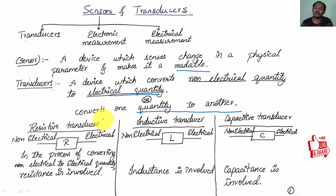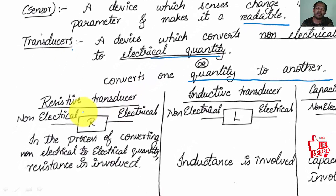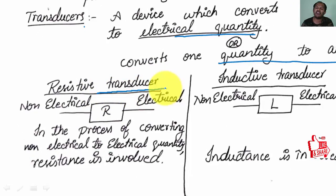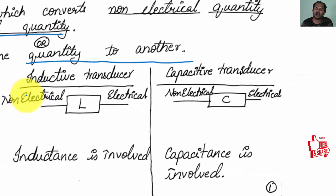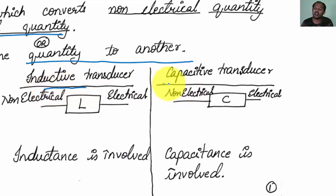A transducer converts non-electrical quantity to electrical quantity. If it makes use of a resistive network, it is called a resistive transducer. If it makes use of inductance, it is called an inductive transducer. If it makes use of capacitance, it is called a capacitive transducer.